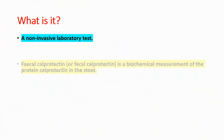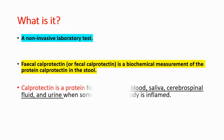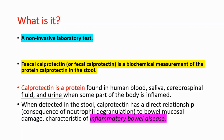First of all, what is it? It's a non-invasive laboratory test. Fecal calprotectin is a biochemical measurement of the protein calprotectin inside of the stool. Calprotectin is a protein found in human blood, saliva, cerebrospinal fluid, and urine when some part of the body is inflamed. When detected in the stool, calprotectin has a direct relationship to bowel mucosal damage, which is characteristic for inflammatory bowel diseases.